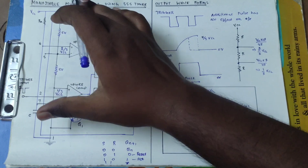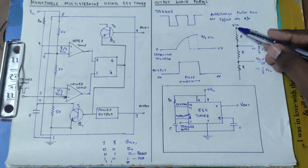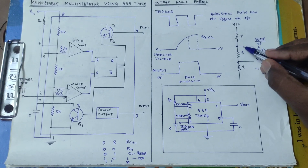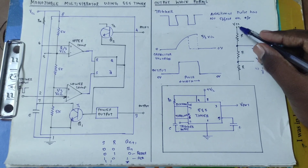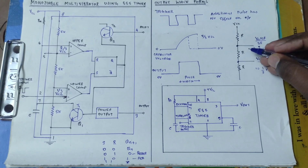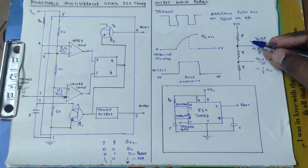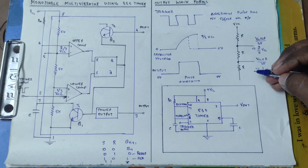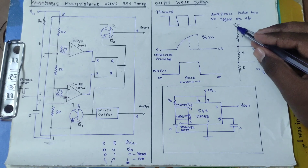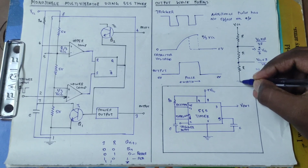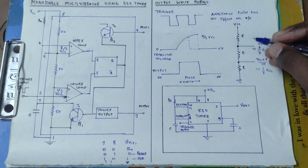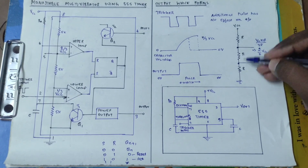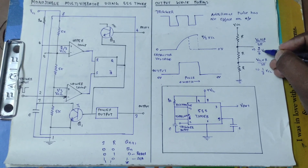This is the voltage divider circuit — Vcc and resistor R with a divider point. The voltage value: Vcc total voltage into the corresponding resistance. The corresponding resistance is in series like 2R. Vcc into 2R, corresponding resistance 2R divided by total resistance R1 plus R2 plus R3, that is 3R. So this cancels and gives 2/3 Vcc.